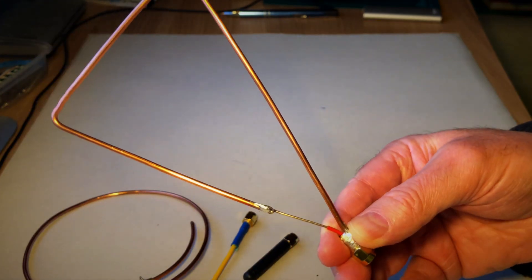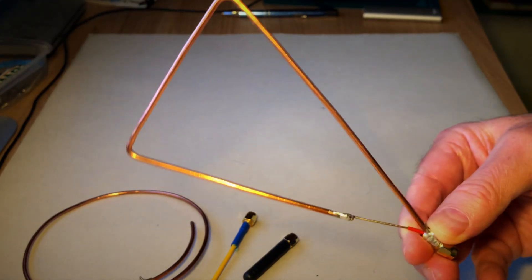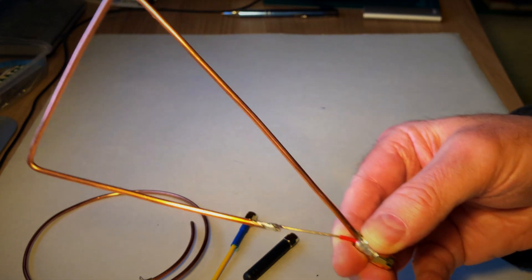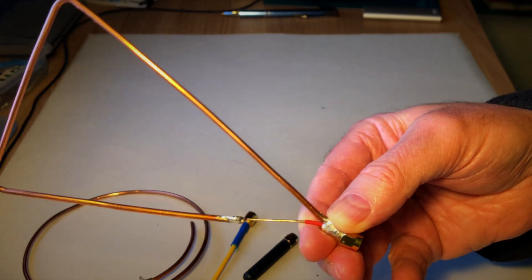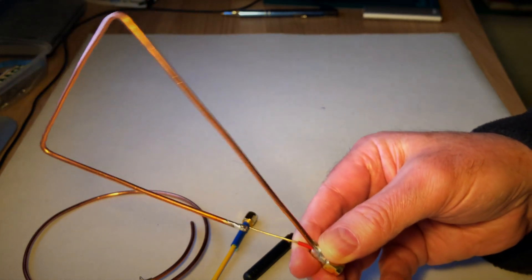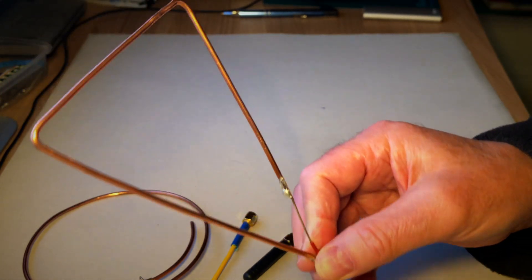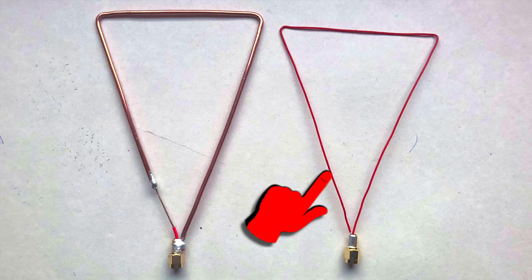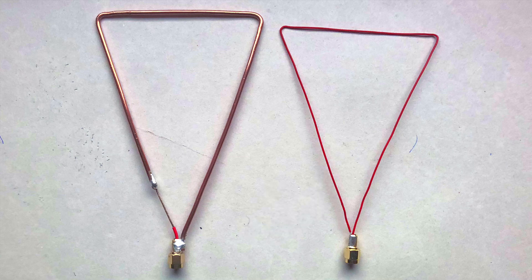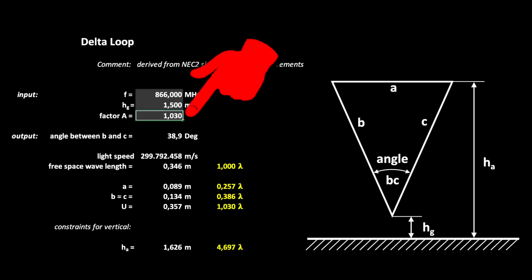The construction is consisting of sturdy 2 mm copper wire. Since the wire is relatively thick compared to the wavelengths of 34.6 cm, we use the length factor A equal to 1.12 in our dimensioning tool. The concept works with 0.3 mm wire too. In that case, a length factor A of 1.03 is appropriate.